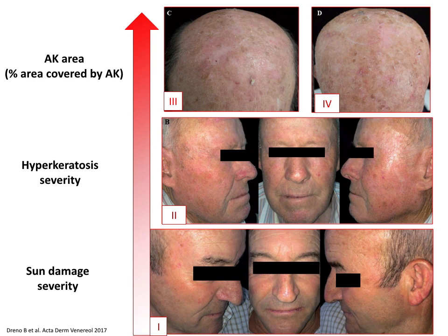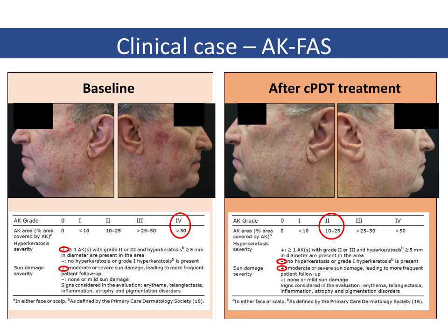This slide shows examples of AK grade 1 with less than 10% area covered by AK, up to grade 4 with more than 50% area covered by AK lesions. Using the AK-FAS method, a downstage of AK severity is observed in a patient treated with conventional photodynamic therapy, due to decreased percentage of involved skin area and reduced hyperkeratosis.